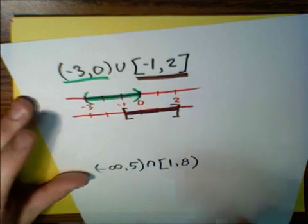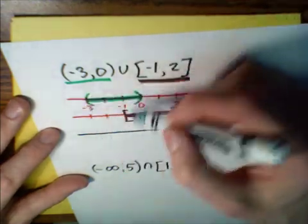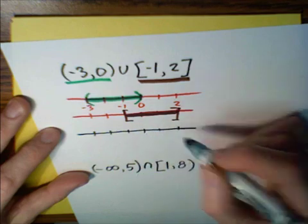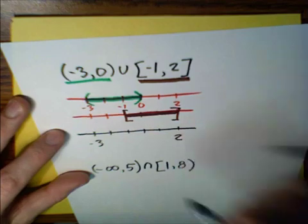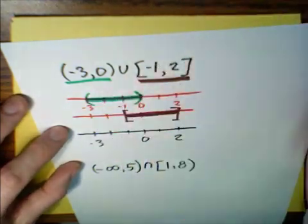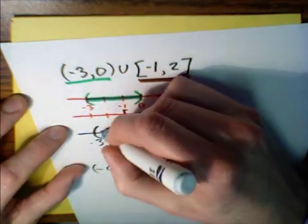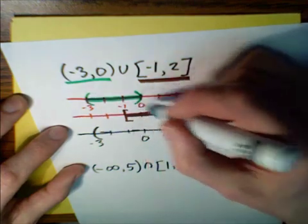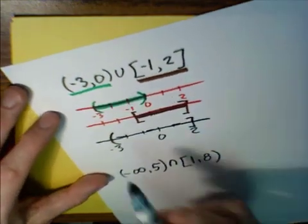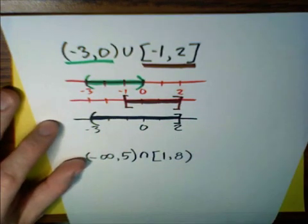Now we draw our resulting number line. Union means we want everything shaded on either of these number lines. We place tick marks at negative three, zero, and two. Negative three has a parentheses — not included. We shade everything across the zones through zero and continuing to two. Two has a hard bracket, so it is included. The final graph of the interval looks like that.